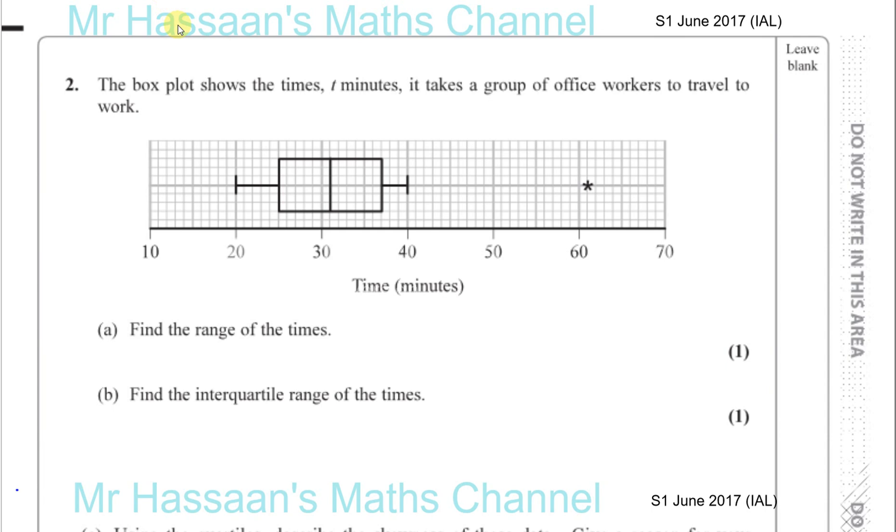Well, the box plot is pretty simple stuff here. Everything's shown visually. We see the lowest and the highest values. So the range is the difference between the highest value, which you can see here, is 61. And the lowest value, which is exactly at 20. So the range of the times is 41, 61 minus 20.